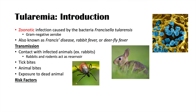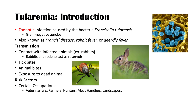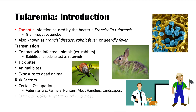The risk factors for this condition are related to the transmission. Certain occupations are more at risk for getting tularemia, such as veterinarians, farmers, hunters, meat handlers, and landscapers. Another risk factor is eating uncooked or undercooked wild meat, particularly rabbit meat. Camping is also a risk due to tick bites and other exposure to infected animals.